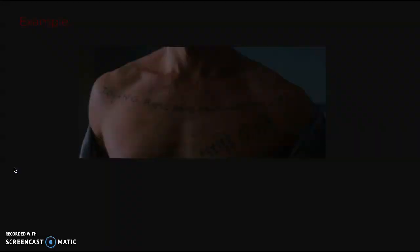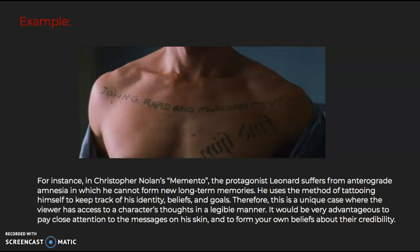Tip one is to look for hints of foreshadowing and make hypotheses that the film will then come to either prove or disprove. For instance, in Christopher Nolan's Memento, the protagonist Leonard suffers from anterograde amnesia in which he cannot form new long-term memories. He uses the method of tattooing himself to keep track of his identity, beliefs, and goals. Therefore, this is a unique case where the viewer has access to a character's thoughts in a legible manner. It would be very advantageous to pay close attention to the messages on his skin and to form your own beliefs about their credibility.